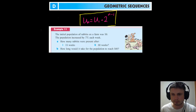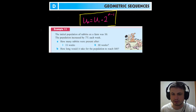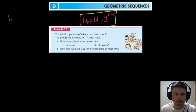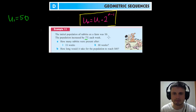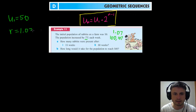Now let's try a word problem — example 11 on the same page. The initial population of rabbits on a farm was 50. The population increased by 7% each week. How many rabbits were present after 15 weeks and 30 weeks? How long would it take for the population to reach 500? So we have u1 equal to 50 as the initial population. A 7% increase each week means it's multiplied by 1.07, so r equals 1.07.